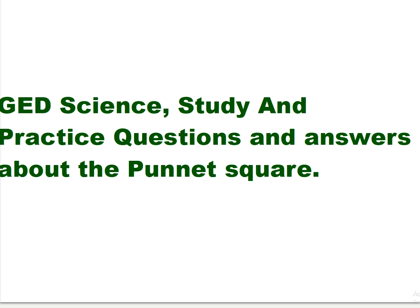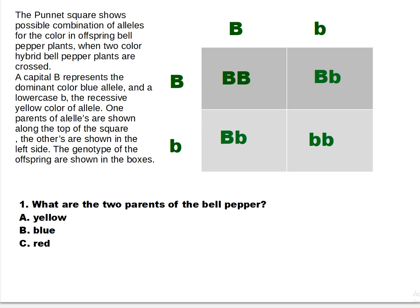Let's get started. I have my own example here. The Punnett square shows possible combinations of alleles for the color in offspring bell pepper plants when two color hybrid bell pepper plants are crossed. A capital B represents the dominant color blue allele, and a lowercase b represents the recessive yellow color allele. One parent's alleles are shown along the top of the square and the other parent's are shown on the left side.